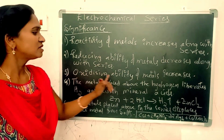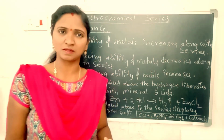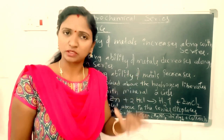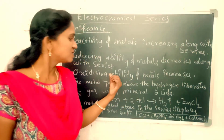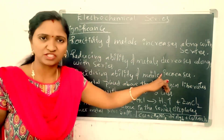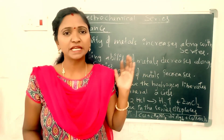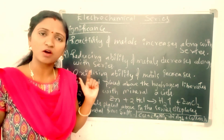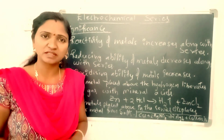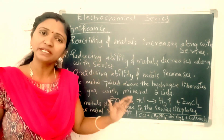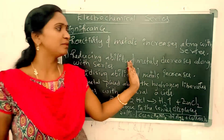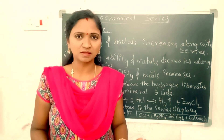Third significance: the oxidizing ability of the metals increases along the series. The metal at the top position has less oxidizing ability, and from top to bottom the oxidizing ability increases. So the metal with less negative potential acts as a strong oxidizing agent, while the metal with more negative potential acts as a strong reducing agent.